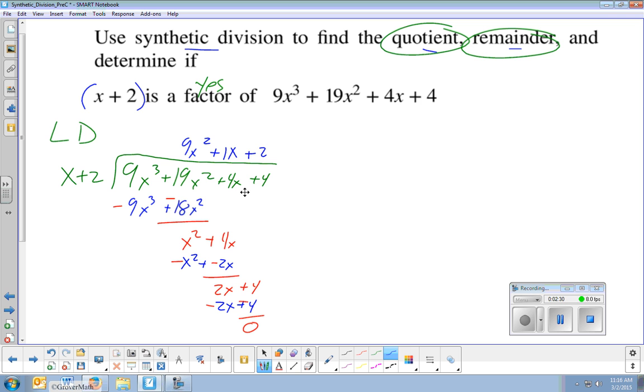Synthetic division is done very similar, just without variables. So it's a little strange at first, but once you get the hang of it, it's really much better than doing this whole process out. So first thing, first we write this, the dividend, the 9x cubed part, this whole long polynomial. We rewrite it, but without any variables and without any plus signs. So just the coefficients.